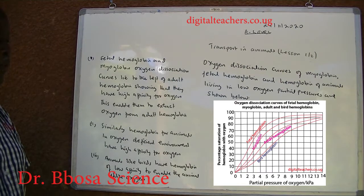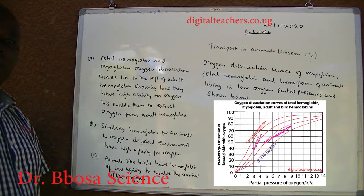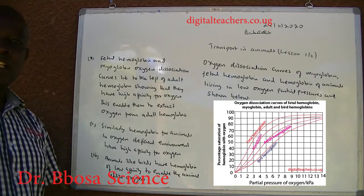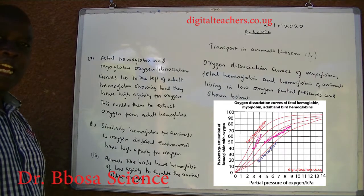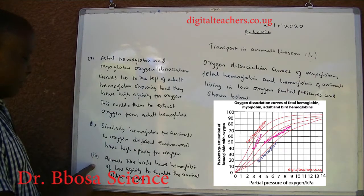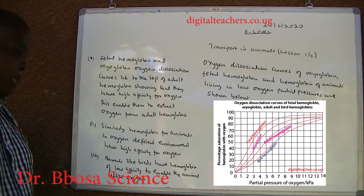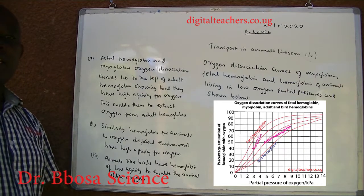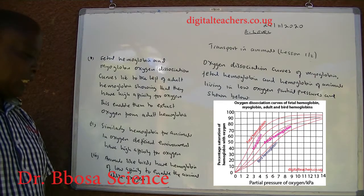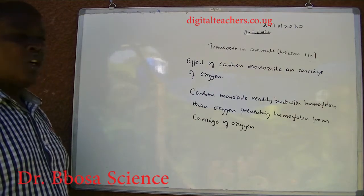Similarly, hemoglobin of animals in oxygen-deficient environments has high affinity for oxygen than adult hemoglobin. Animals like birds have hemoglobin with low affinity to enable them to utilize oxygen.